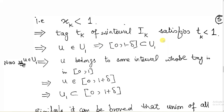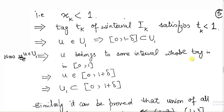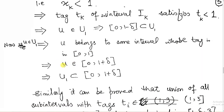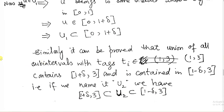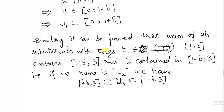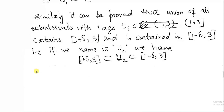Now we prove u1 ⊆ [0, 1 + delta]. Let u be from u1; it belongs to a sub-interval whose tag is in [0, 1], which gives u ∈ [0, 1 + delta]. Hence u1 ⊆ [0, 1 + delta]. Similarly, we can prove that the union u2 of all sub-intervals with tags in (1, 3] satisfies: [1 + delta, 3] ⊆ u2 and u2 ⊆ [1 - delta, 3].